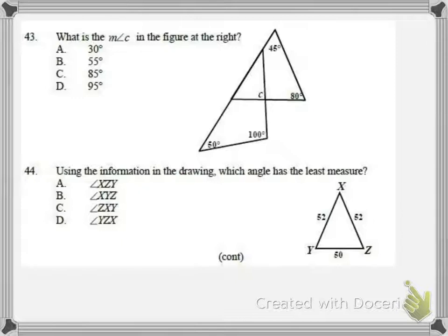For number 43, we need to find the measure of angle C. Now, think of this as two triangles that are overlapping. So, if I focus on each triangle one at a time, I can find pieces I need. So, if I look at the top one, I have 45, 45, and 80. Or, 45 and 80. Add those together, I get 125, and I subtract that from 180, and I get 55. That's the angle right here.